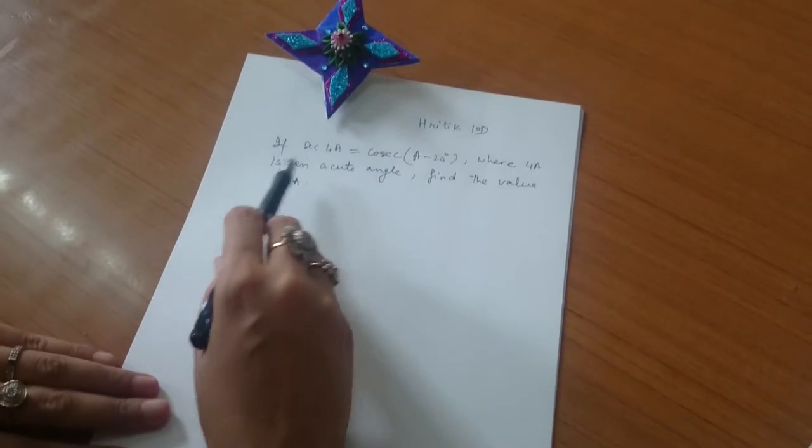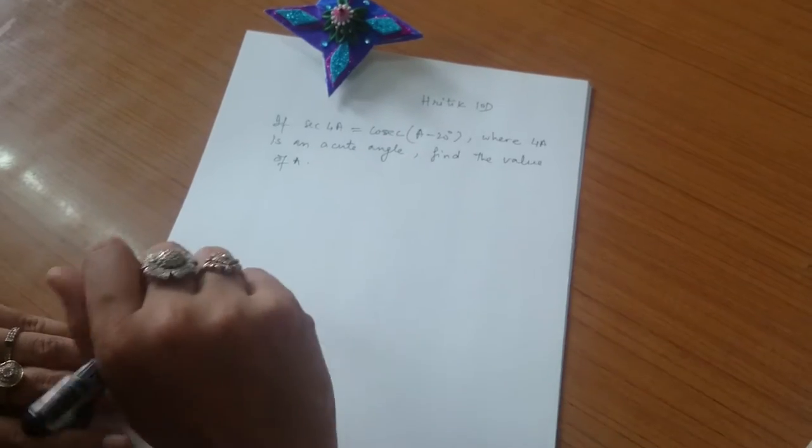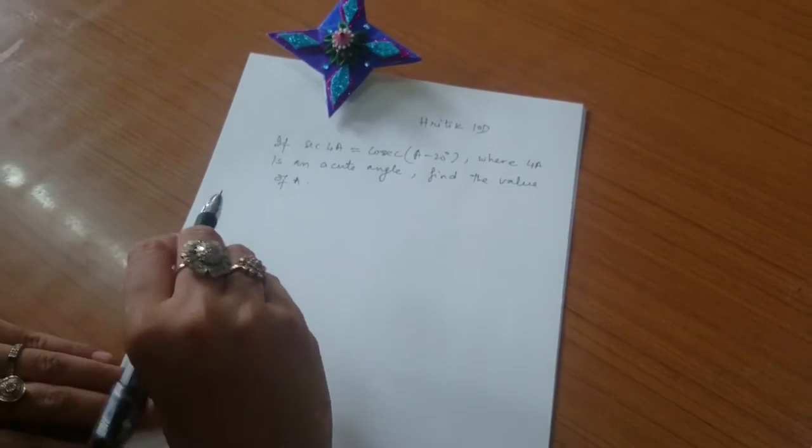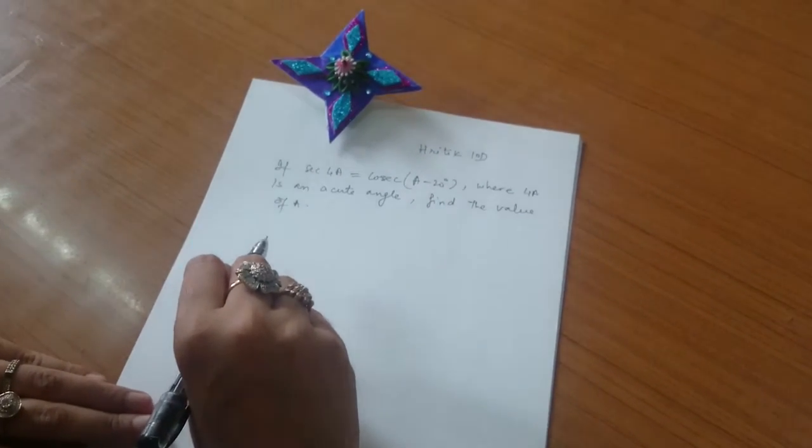Hrithik, question for you is, if secant 4a is cosecant a minus 20 degrees, where 4a is an acute angle, find the value of a.